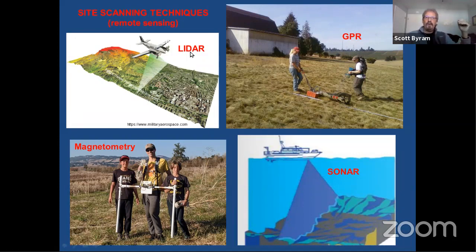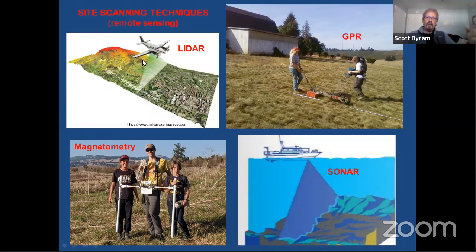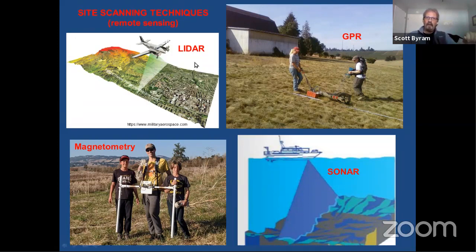One technique that's fairly common and very effective is LIDAR. It can be done on the ground with an instrument on a tripod, which ARF uses, but more often it's done from an airplane. It uses laser technology and light information to characterize topography and features — for example, Mayan cities and agricultural channels present under a forest canopy in the Yucatan Peninsula can be characterized with LIDAR.